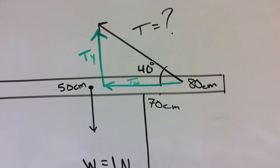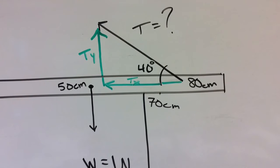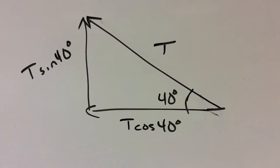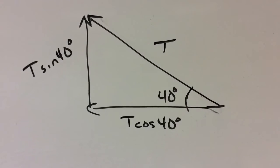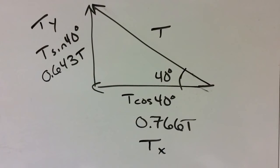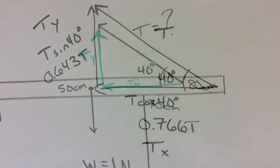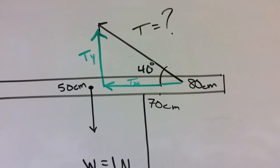As we do with all forces that are not acting along the x or y axis, we're going to split that tension into its two components by multiplying the tension by the sine and cosine of the angle, leaving you with 0.643 times T, the unknown tension, and 0.766 times T.